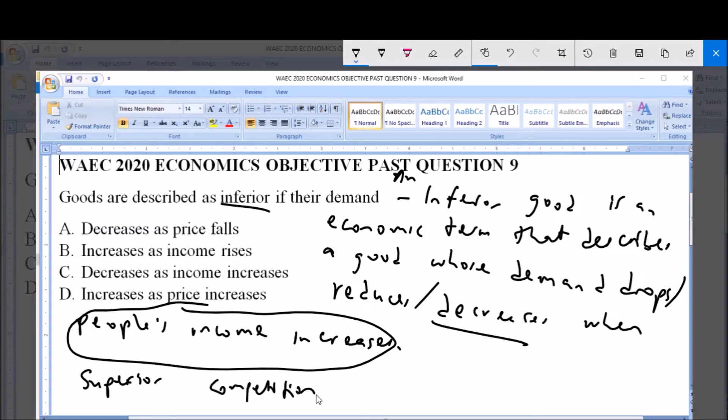which the consumers are choosing. So consumers are choosing superior products due to the fact that their income is increasing, so they are going for substitutes that they feel are better because they can now afford them.